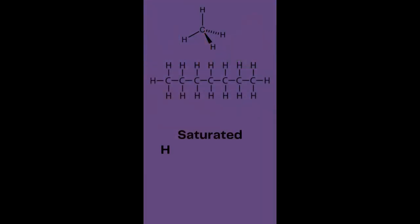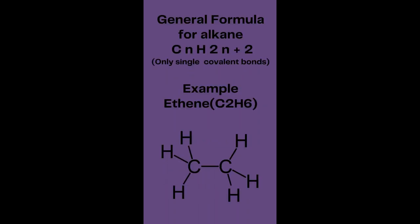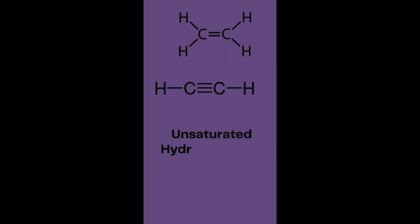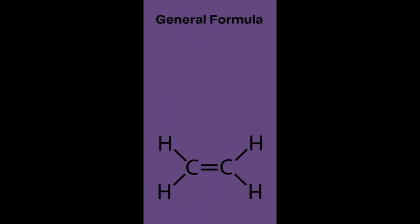Saturated and unsaturated hydrocarbons. Saturated hydrocarbons contain only carbon-carbon single bonds. General formula for alkane: C n H 2n plus 2, only single covalent bonds present. Example: ethane C2H6.